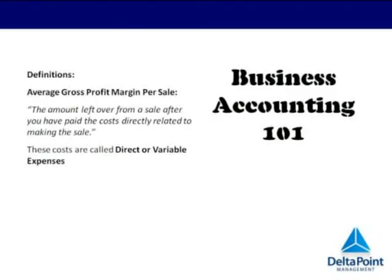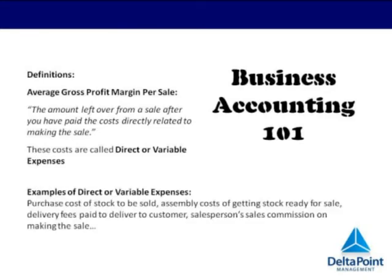Your average gross profit margin per sale is the amount left over from a sale after you have paid the costs directly related to making the sale. These are called direct expenses. And if you are selling physical items, for example computers, they will be costs like your buy price for the computer component, the salesperson's commission on sale, and if you pay your tech guy a piece rate to build each computer, his build cost. The key factor here is that these costs are only triggered when an item is sold. If there is no direct relationship between the cost being incurred and an item being sold, the cost should not be included as a direct cost.